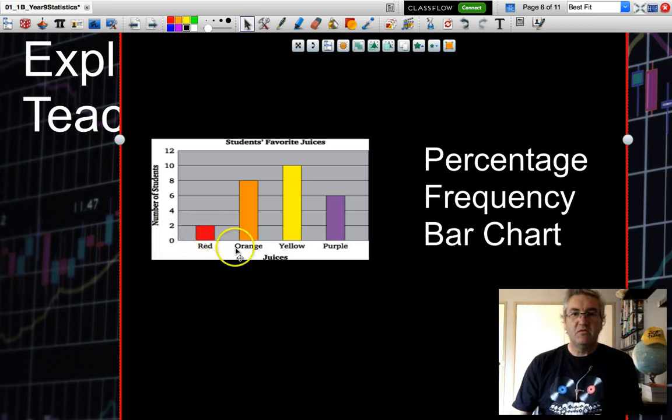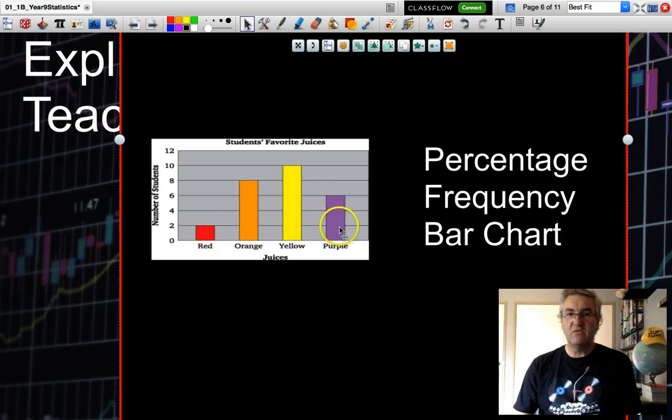So this particular chart is looking at perhaps the students' favorite juices. We've done a survey, transferred the information onto a bar chart. And if I wanted to convert this to a percentage frequency, what I would need to do is count the total number of students that were surveyed. So in this situation, 2 plus 8 plus 10 plus 6 is 26.